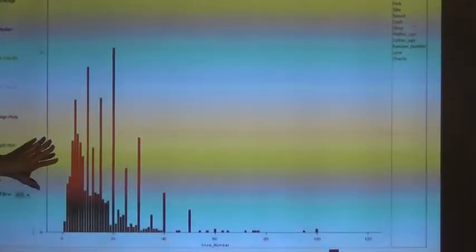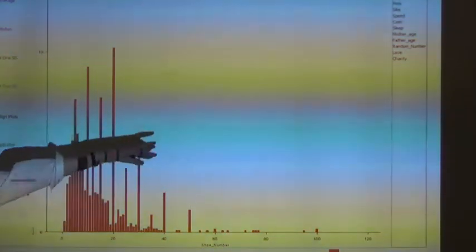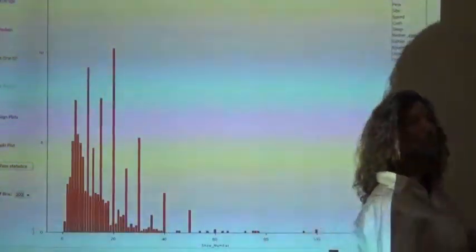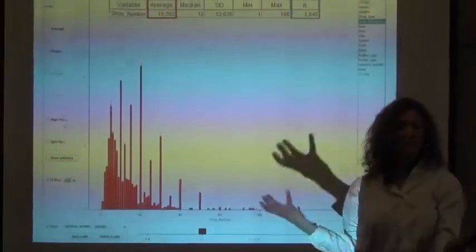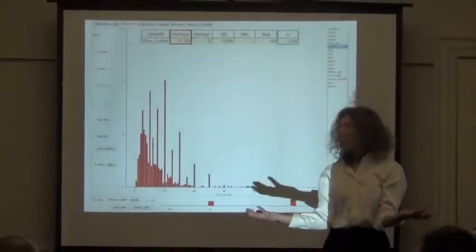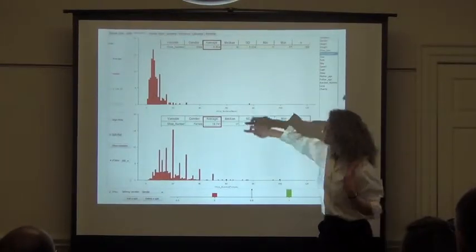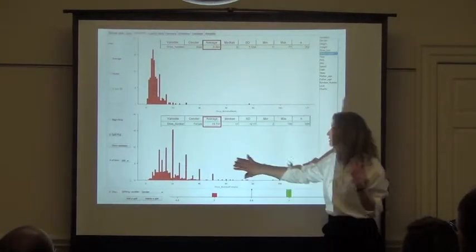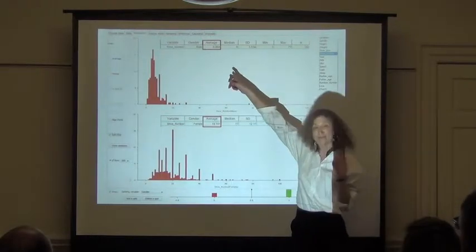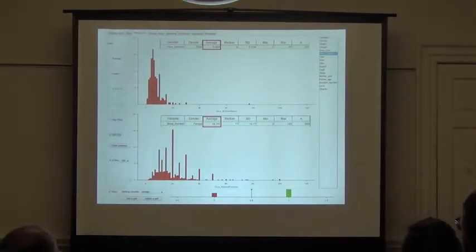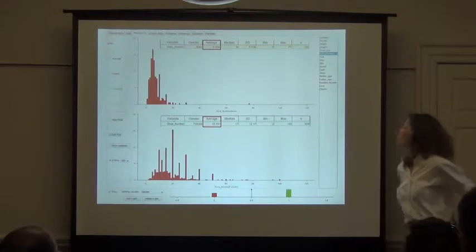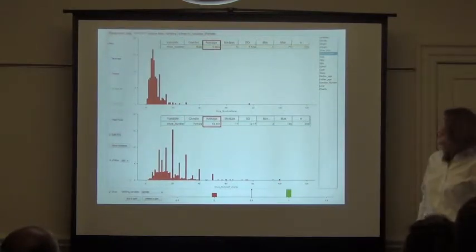So now you might think this is all the men and women together. What happens if we split the data? Do you think they're going to have a similar pattern? Do you think they're going to have the same averages? No way. Let's look. Look at the huge difference. These are the women with an average of almost 20. Men with an average of 7. Hugely different. Women have so many more shoes than men. So many. Here's somebody with 100 shoes.